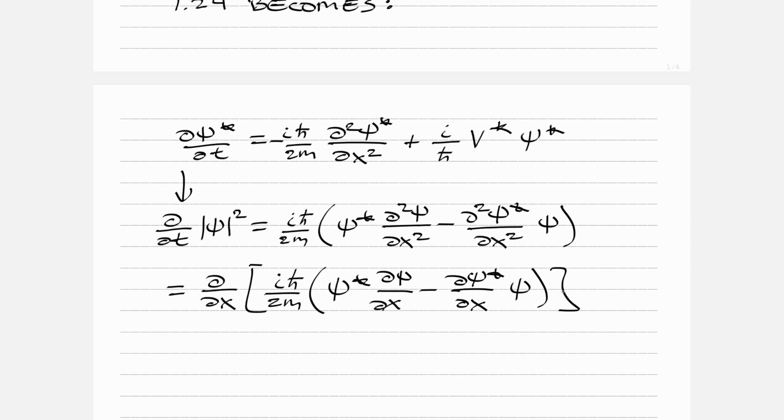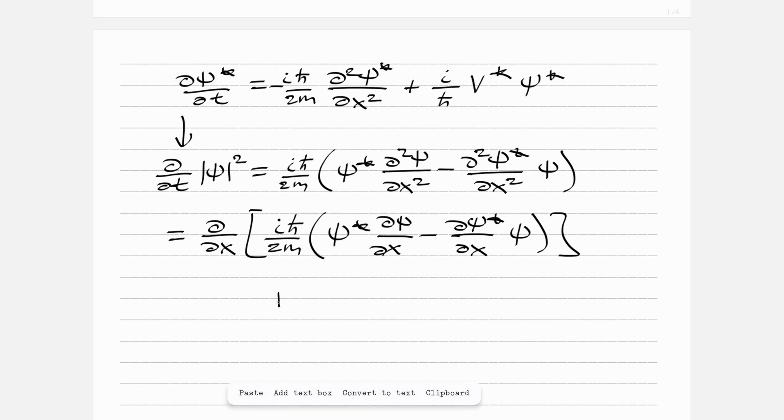But now we're going to have a new term: plus the integral i over ℏ bar |ψ|² (V* - V). Again following along with the book, this goes to zero as before, this goes to zero as before, but we have this new term.